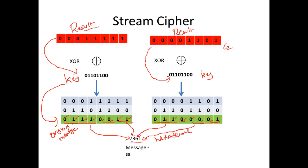Converting those hexadecimal characters back to a string gives the original plaintext message. So in stream cipher: we take a stream of bits and encrypt them. The advantages are that it is faster, uses less code, and there is no need for any padding as required in block cipher.